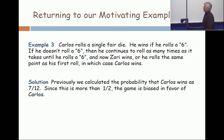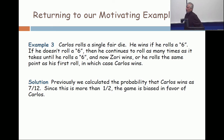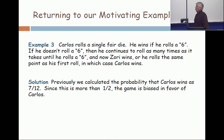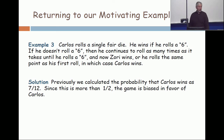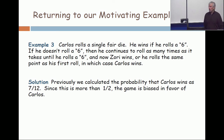Back to this one: Carlos rolls a single fair die. He wins if he gets a six; otherwise, he sets a point and rolls until he gets a six, where he loses. We've already calculated this probability to be seven out of twelve. So on a one-dollar wager, he would win with probability seven over twelve and lose with probability five over twelve. The expectation on a dollar bet would be two over twelve, which is positive. Carlos is really in the favored position in this game.